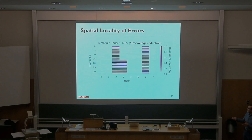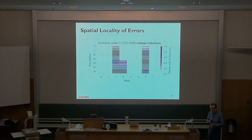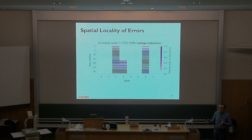The other observation is spatial locality of errors. Different banks for a given DRAM chip — different rows in the bank — show that some banks are much more error-prone compared to others at a given reduced voltage, like 12% reduction. You see errors in some banks but not in others. This could be because of process manufacturing variation in the voltage supply lines going to different banks. We don't know exactly the reason since we don't know how voltage distribution happens exactly in a particular DRAM chip.